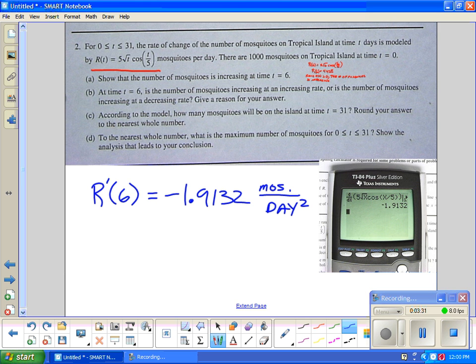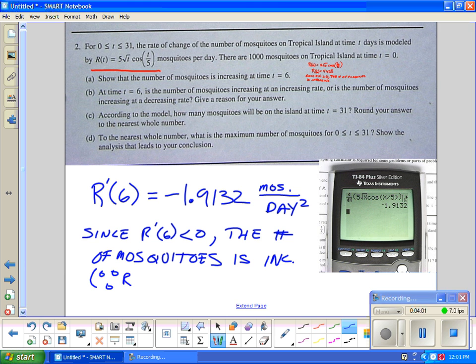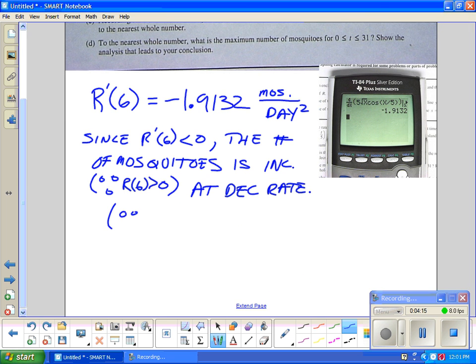Now we need a sentence just like the last one. Since R'(6) is less than 0, I would say the number of mosquitoes is still increasing, because R(6) is greater than 0, at a decreasing rate because R'(6) is less than 0. That's what I would write.